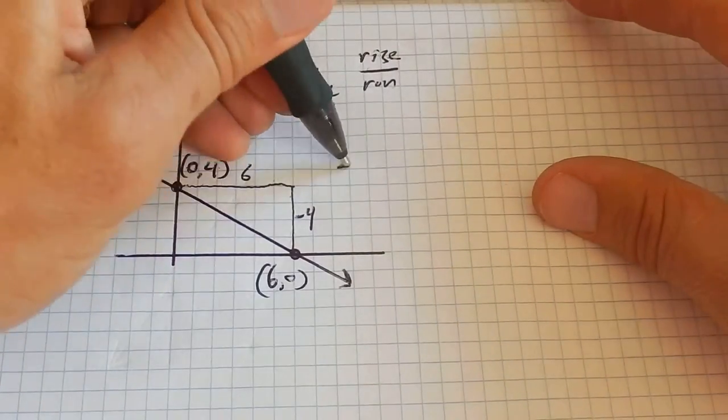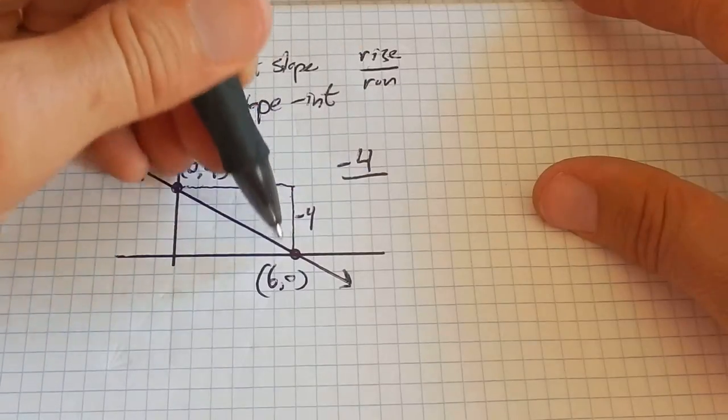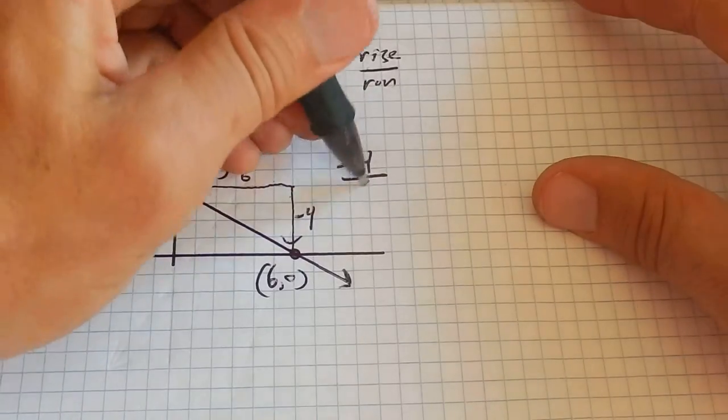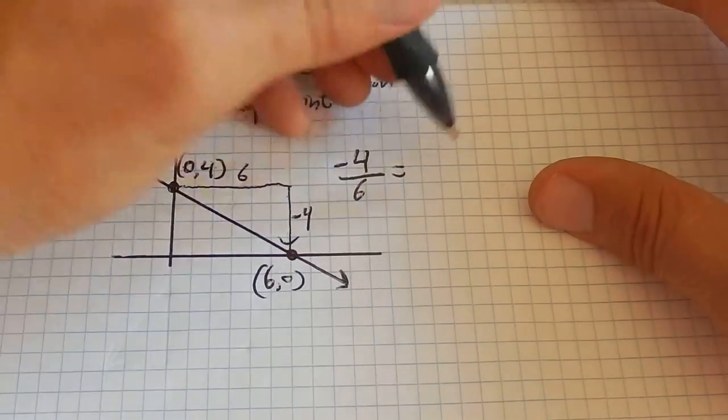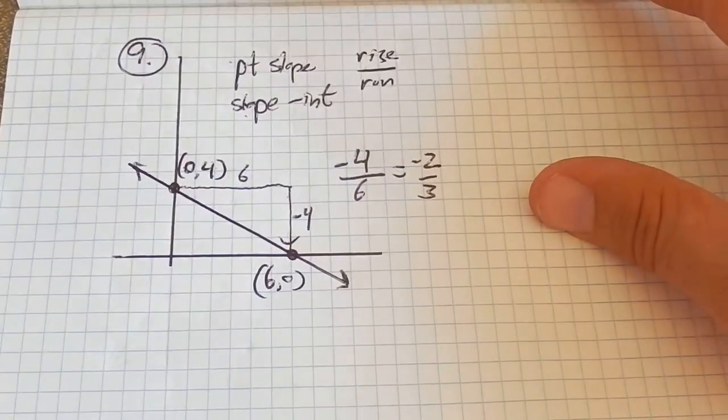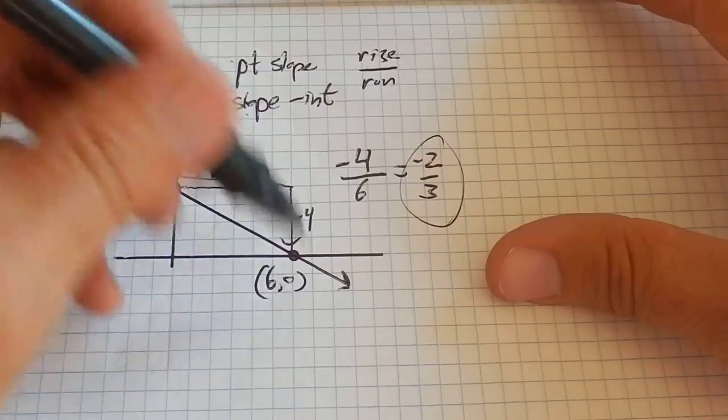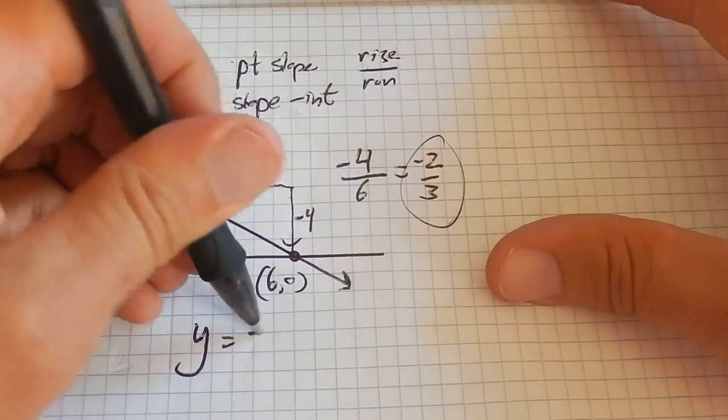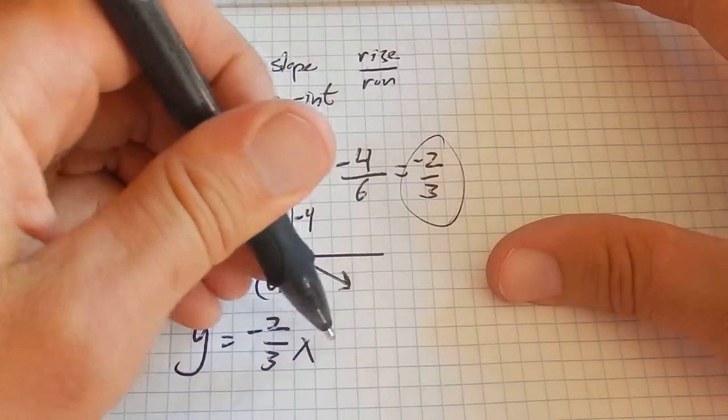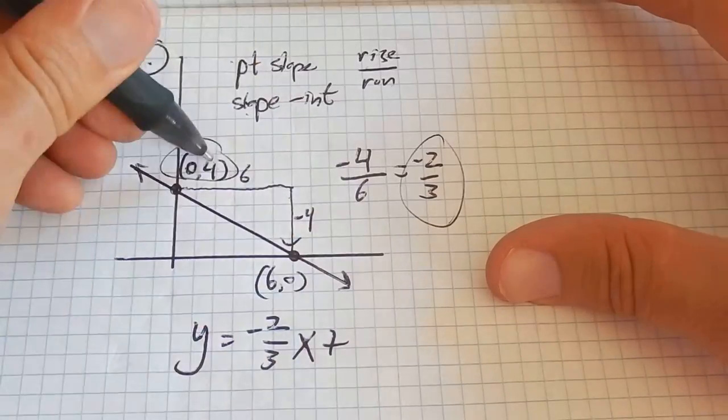Rise over run. So rise is negative 4, because it's dropping. Run is 6. I can reduce that fraction to negative 2 thirds. So I know the slope, and I know the y-intercept. So I would just write y equals my slope times x plus my intercept.